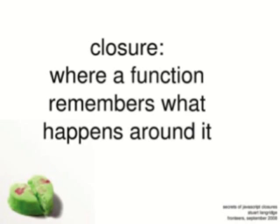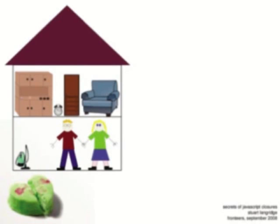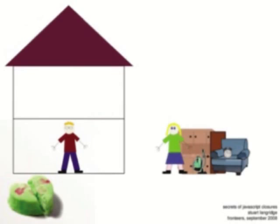The best analogy I can come up with is myself and my wife in our house. When my wife became my ex-wife, she took all the stuff from the house with her. She moved out of the house but all the stuff went with her, so she still had everything that was there around her. So think of it that way — it's when you take a function out of the context that it's in, it remembers the context even though it's not there anymore.